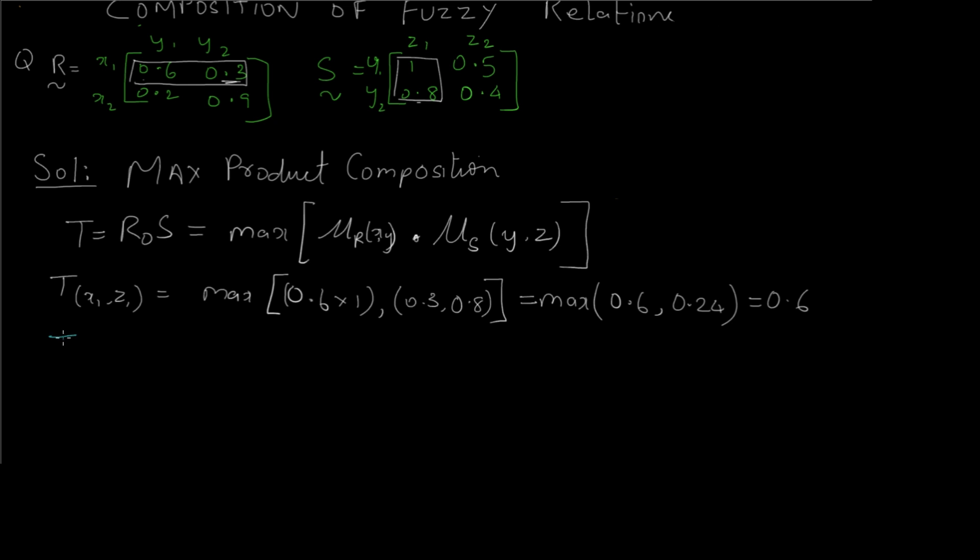Similarly, we have to find other values as well. That is x1 comma z2, which is given by max of... Now we take the first row because it is x1 and second column because it is z2. So 0.6 into 0.5 comma 0.3 into 0.4, which gives us max of 0.3 comma 0.12, and the maximum is 0.3.